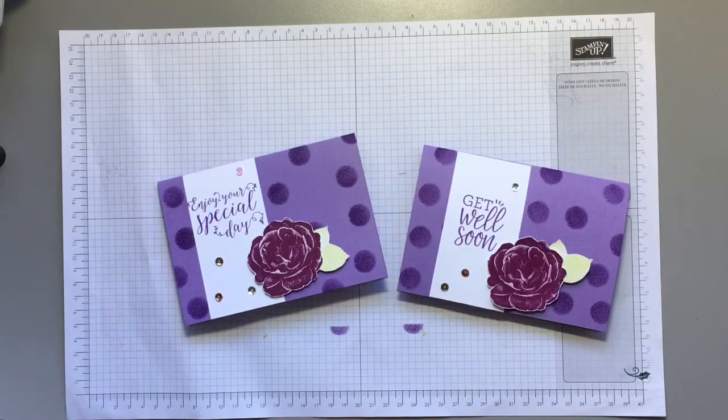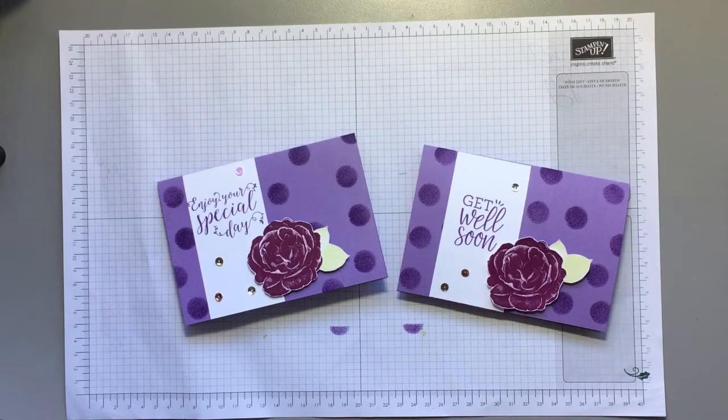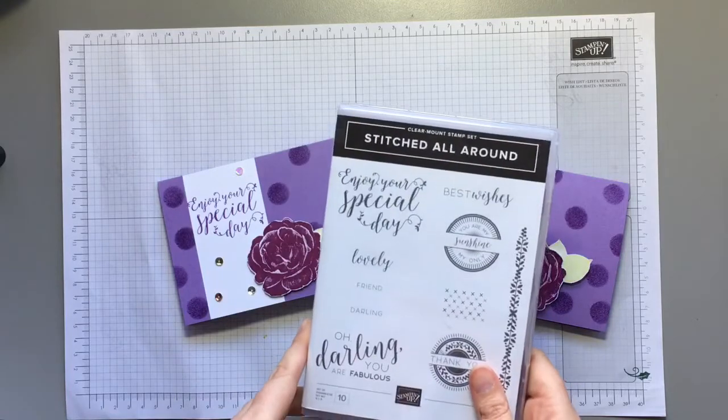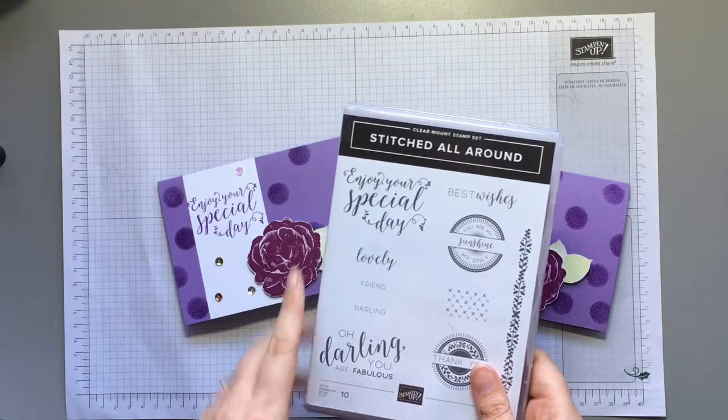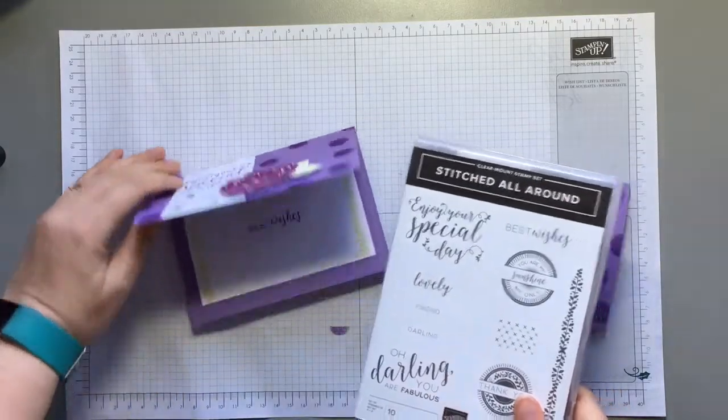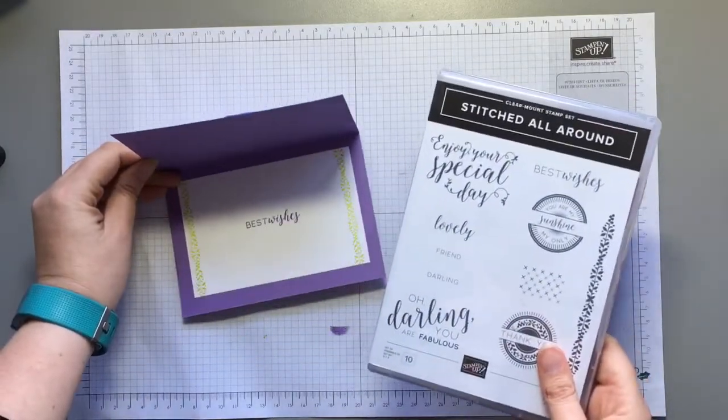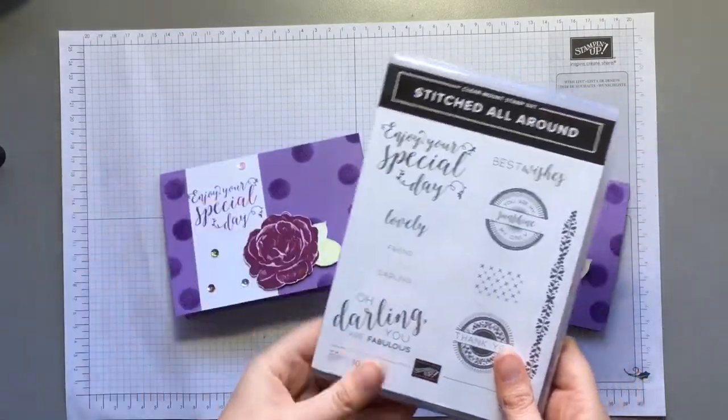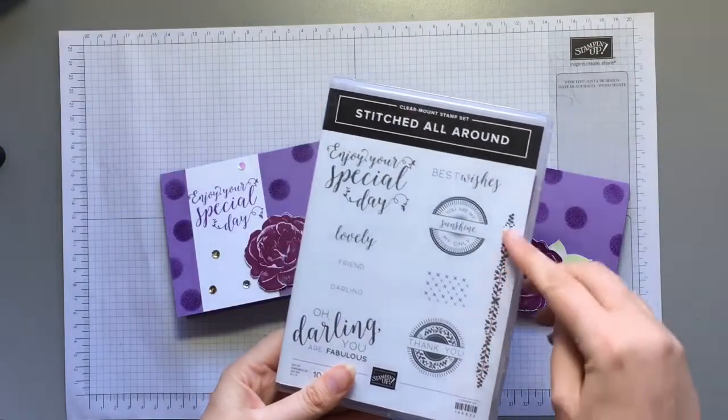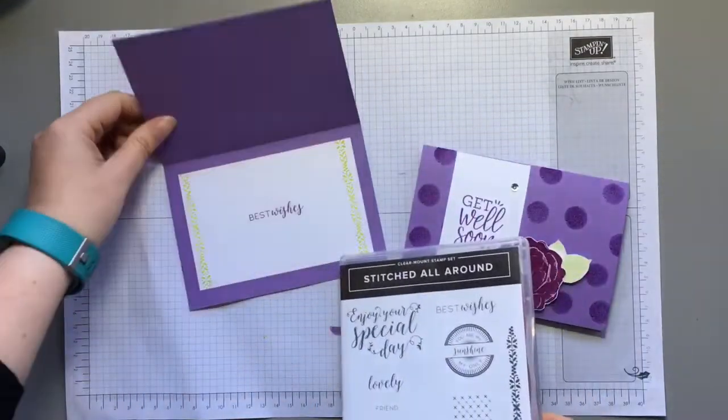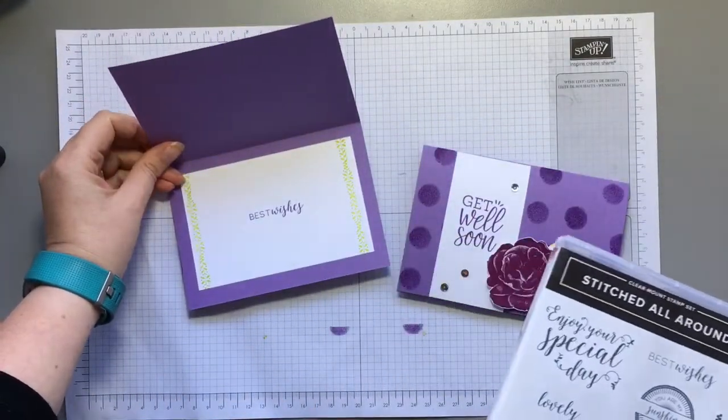On the second card I have used the Healing Hugs stamp set for the flower as well but the sentiment has come from the Stitched All Around stamp set saying Enjoy Your Special Day and then on the inside I've stamped Best Wishes and I've used this stamp just here just to add a little bit more interest on the inside.